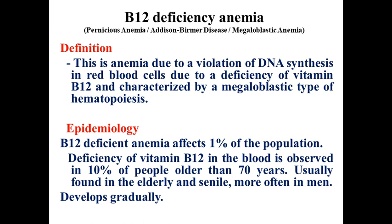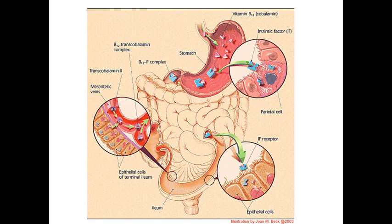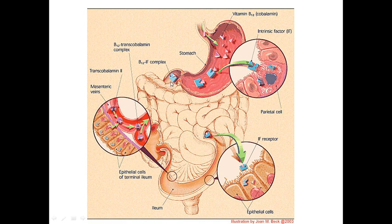Deficiency of vitamin B12 in the blood is observed in 10% of people older than 70 years — it is usually found in the elderly, more often in men, and develops gradually. For absorption of vitamin B12 we need intrinsic factor, which is produced by parietal cells of the stomach. This intrinsic factor binds with vitamin B12 and prevents its destruction until reaching the absorption area in the small intestine. Without intrinsic factor, vitamin B12 is destroyed by gastric juice and duodenal enzymes.